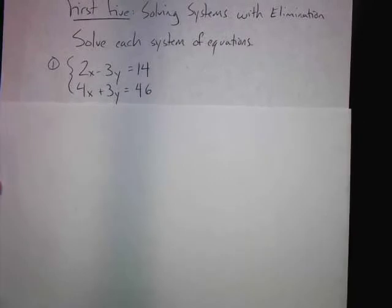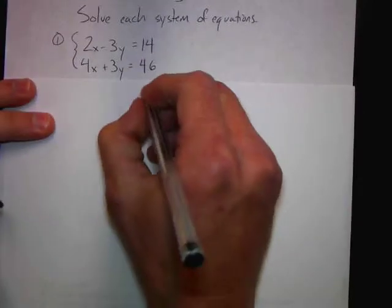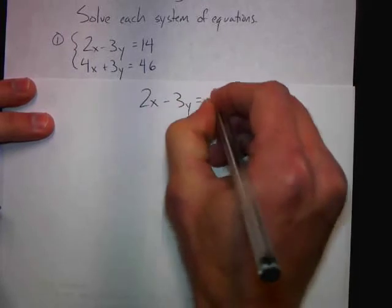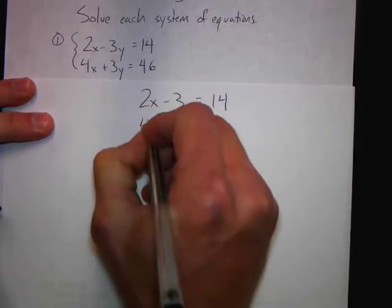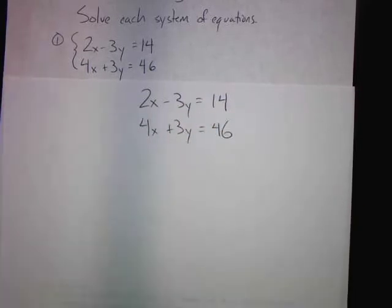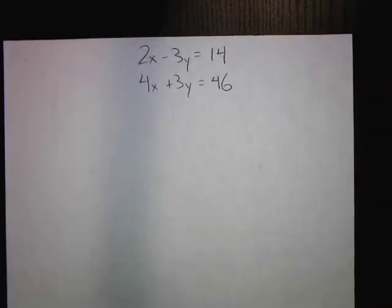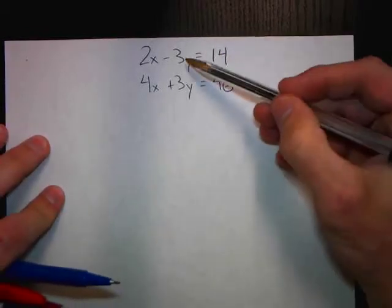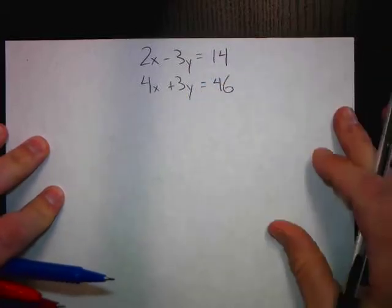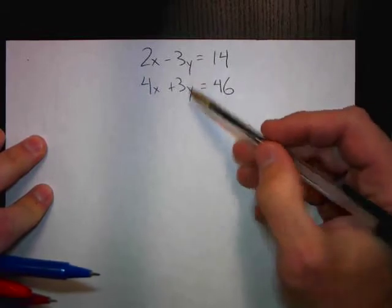So I'm going to start with the first system of equations. We have 2x minus 3y equals 14, and we have 4x plus 3y equals 46. Just like substitution, what we have to do is get from two variables down to one. Take a look at something interesting — we have a minus 3y here and a plus 3y here. If we added these two things, the y's would cancel.